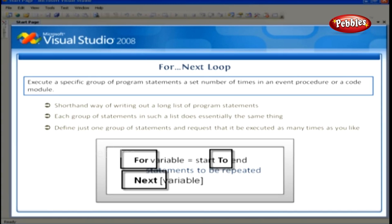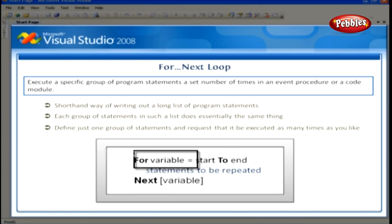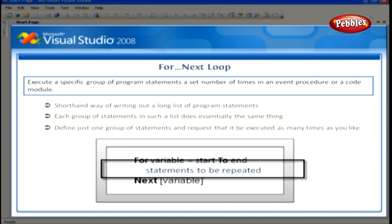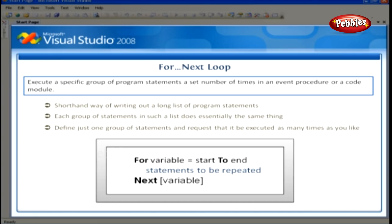You replace 'variable' with the name of a numeric variable that keeps track of the current loop count. The variable after Next is optional. We replace Start and End with numeric values representing the starting and stopping points for the loop. The lines between the For and Next statements are the instructions that are repeated each time the loop is executed.